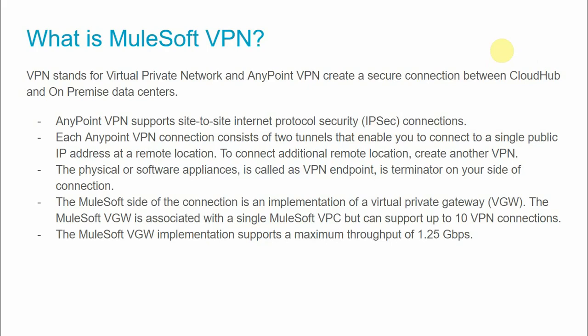VPN stands for Virtual Private Network. Anypoint VPN creates a secure connection between CloudHub and your on-premise data center. For example, if you have deployed your application on CloudHub and you want to access a Microsoft SQL database or any database or services that exist on an on-premise data center, you need to create a VPN between CloudHub and that on-premise data center.